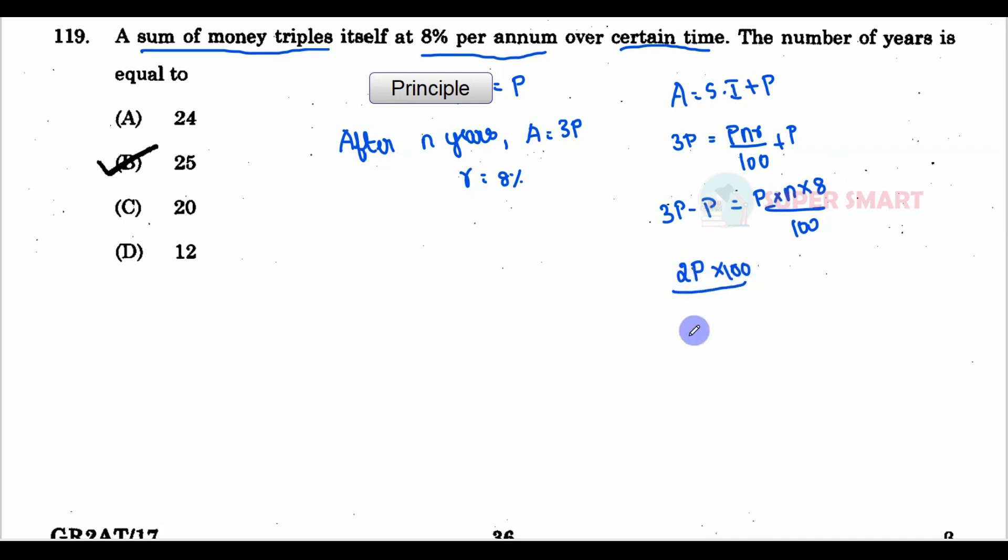Canceling P from both sides, we get 2 = (n × 8)/100. Simplifying: 200 = 8n, so n = 25. So at 8% interest rate, the amount triples in 25 years.